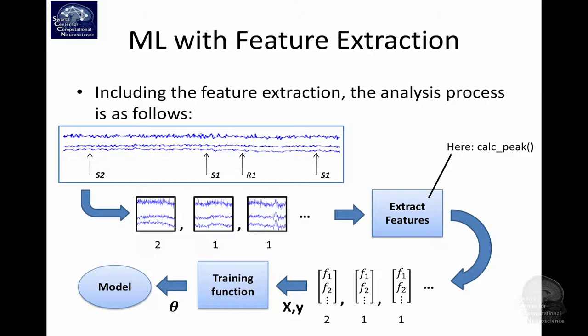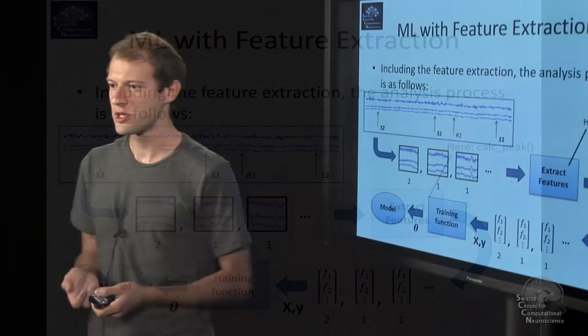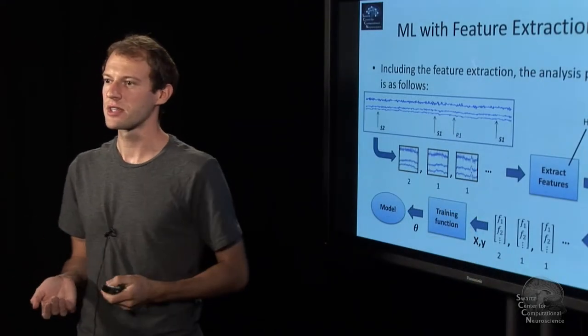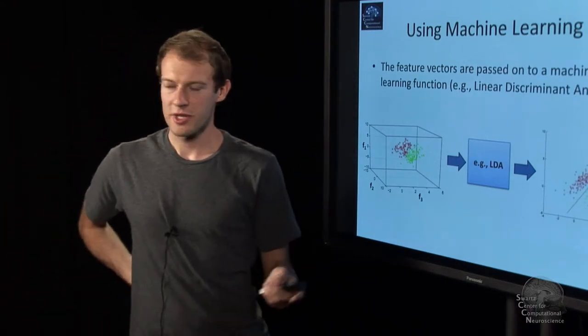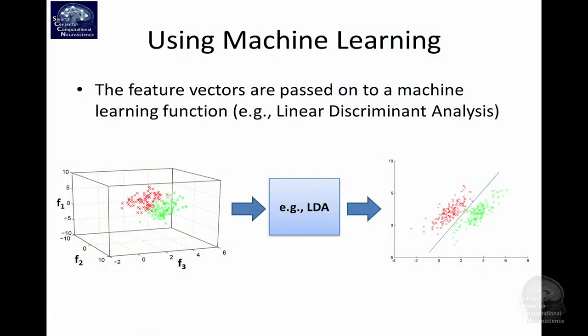One simple algorithm is linear discriminant analysis, one of the simplest possible. The idea is you're finding a plane that lies in this space which nicely separates the two point clouds, so that you can tell if a point is on one side of the plane it's, say, class one. And if it's on the other side of the plane, hyperplane by the way, it's class two. This is a way to label points.